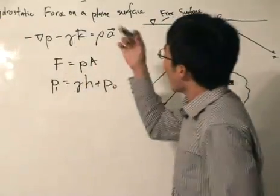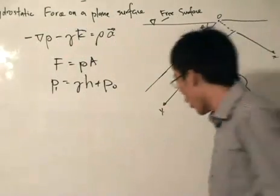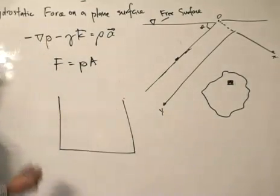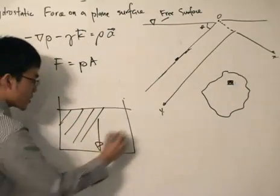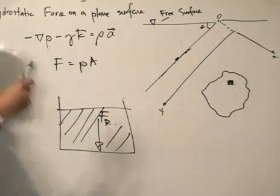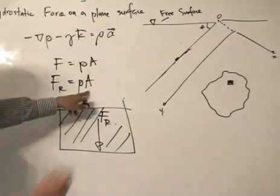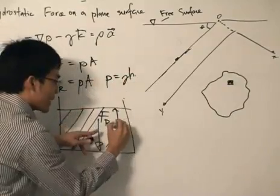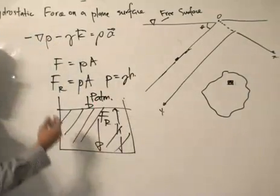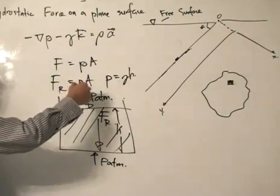So now we want to study the hydrostatic force on a plane surface. What does that mean? It means that if we pick a certain surface in the fluid, what is the force acting on that surface? It might seem straightforward from the equation. If I draw an illustration — say we've got a tank with fluid — we are concerned with the force FR, the resultant force acting on this surface. I can simply write: the resultant force equals pressure times area, where pressure equals specific weight times height.